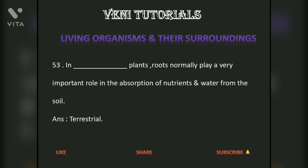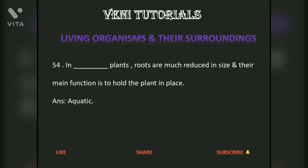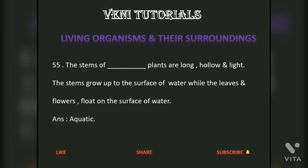In terrestrial plants, roots normally play a very important role in the absorption of nutrients and water from the soil. In aquatic plants, roots are much reduced in size and their main function is to hold the plant in place. The stems of aquatic plants are long, hollow and light. The stems grow up to the surface of water while the leaves and flowers float on the surface.